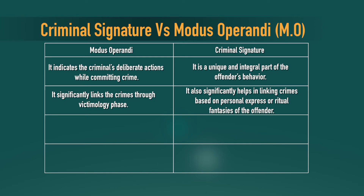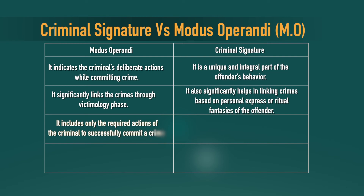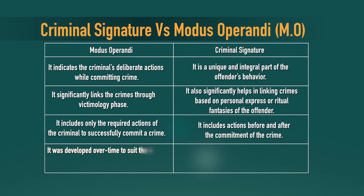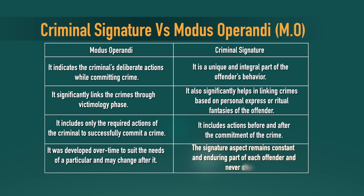The modus operandi includes only the required actions of the criminal to successfully commit a crime. The criminal signature, on the other hand, includes actions before and after the commitment of the crime. Modus operandi was developed over time to suit needs and may sometimes even change, whereas the criminal signature remains constant — an enduring part of each offender that never changes.